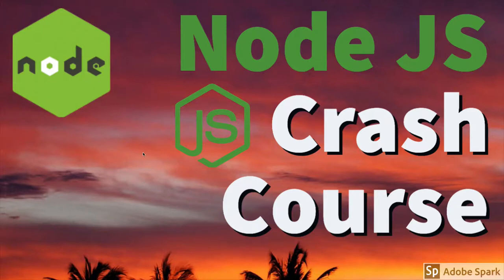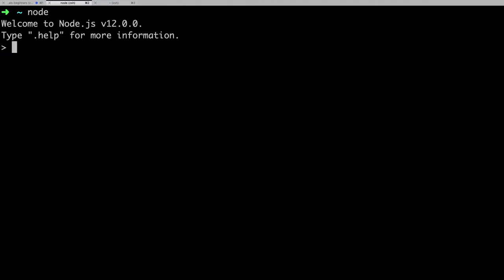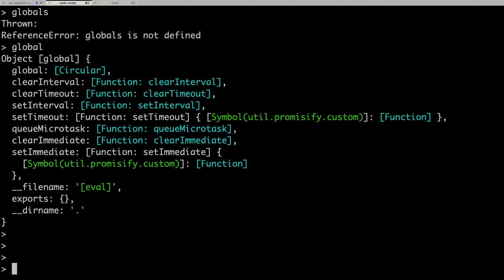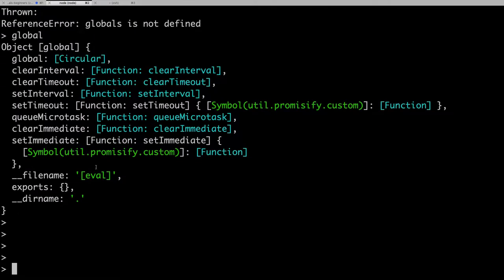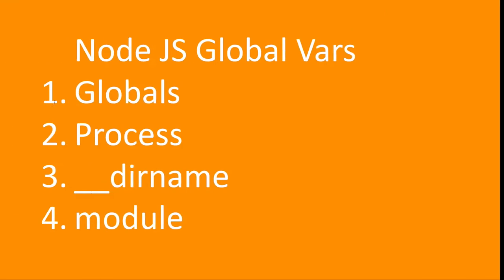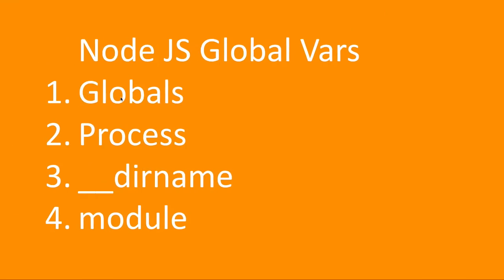In this video we are going to talk about what are globals in Node.js. Here we have entered into the Node.js CLI. When we do 'global', we are able to get a lot of different things. In JavaScript we have a process variable for the Node.js process, we have modules, we have globals. What is the significance of all these variables and how are they going to help your Node.js program?